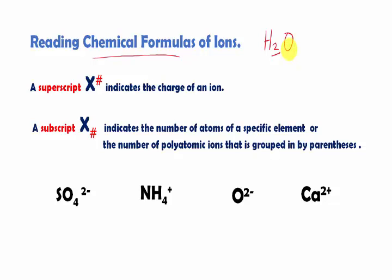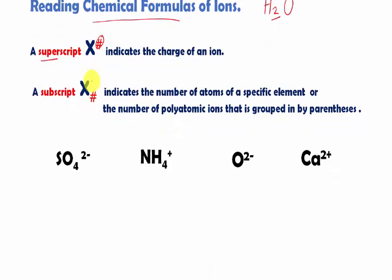Now, in the chemical formulas of ions, there are two common numbers that you need to understand. The first one is called a superscript. A superscript - think of the word Superman - Superman always flying high. You can think of this number as the number that's flying above the element symbol. Here I have a generic element symbol, X, and here I have a superscript flying above up there.